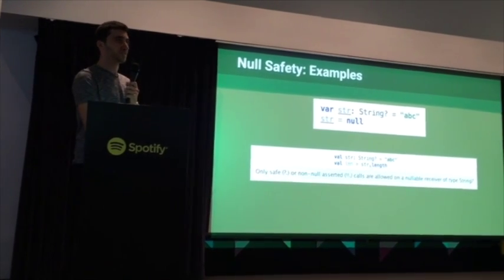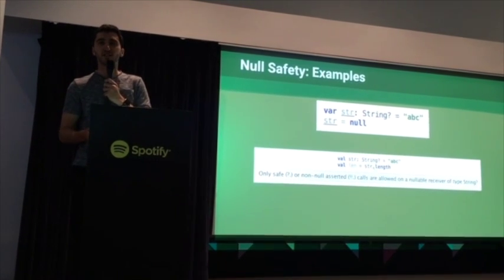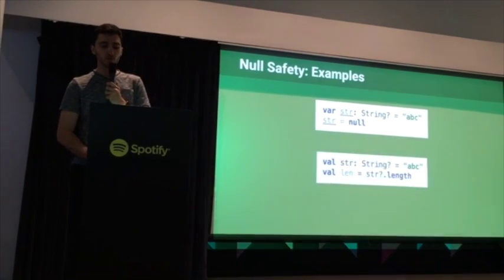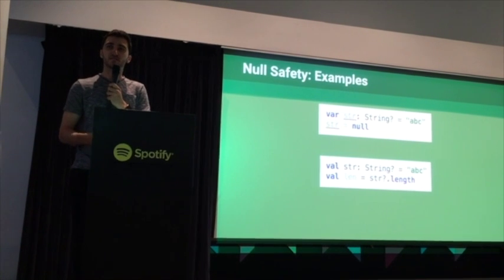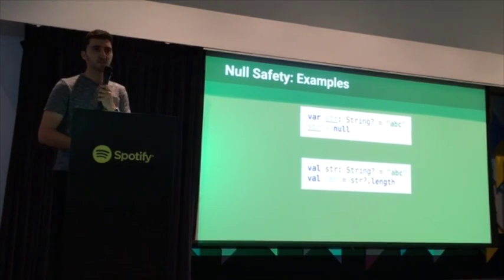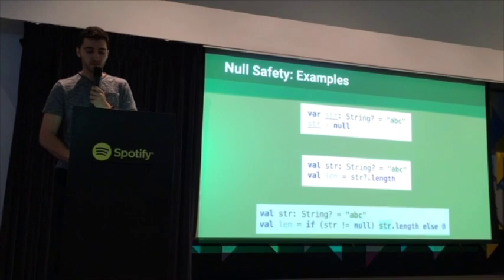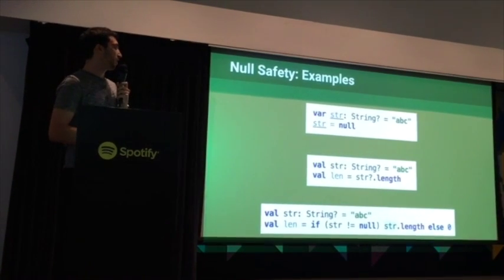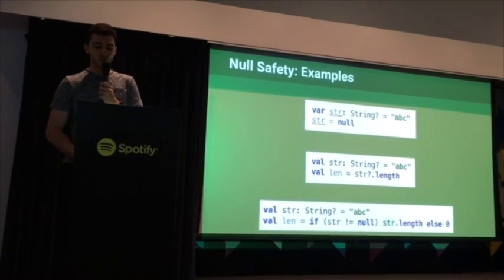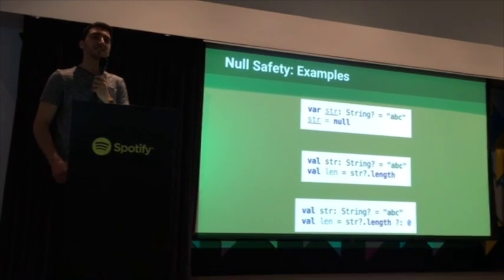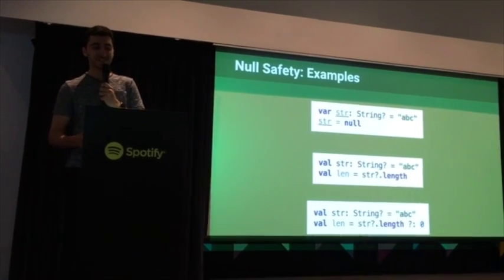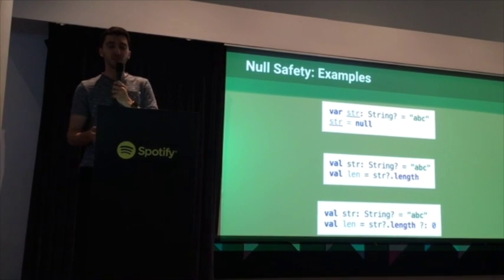You could surround a null check with an if statement, or you could use Kotlin's null-safe operator, which is a lot more concise. The way this works is: if the string variable is null, the whole expression returns null and you can continue. The last example is if you wanted to provide a default value in the case of null — you could use an if-else or what's called the Elvis operator. It's named that because it looks like a little emoji with a hair flip on the side. If the string is null, it will default to the value of zero.